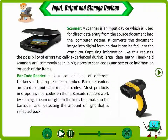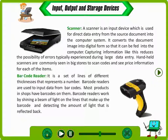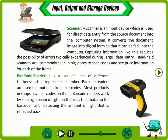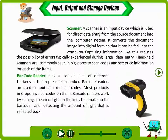A barcode is a set of lines of different thickness that represents a number. Barcode readers are used to input data from barcodes. Most products in shops have barcodes on them. Barcode readers work by shining a beam of light on the lines that make up the barcode and detecting the amount of light that is reflected back.